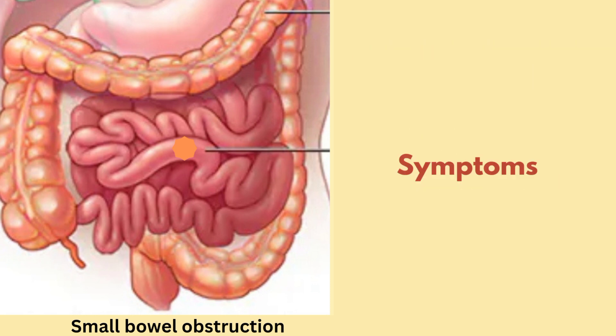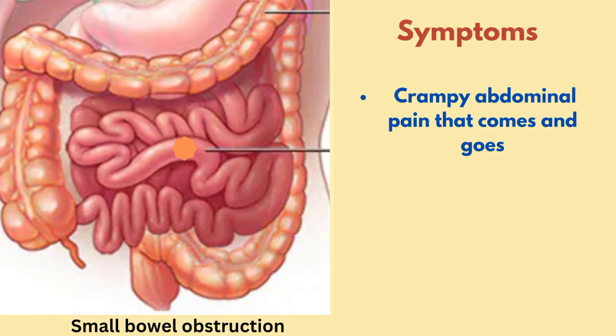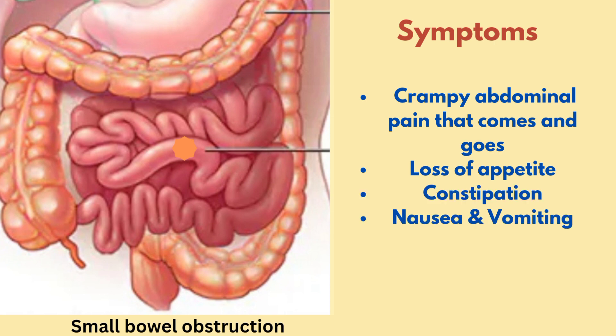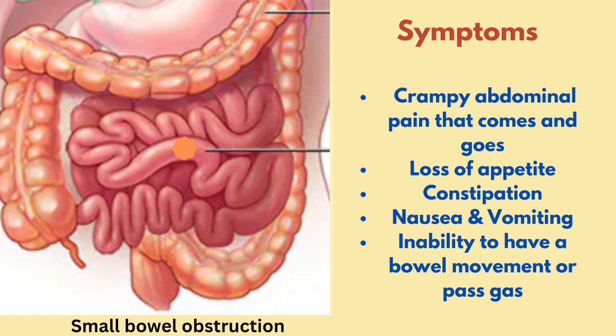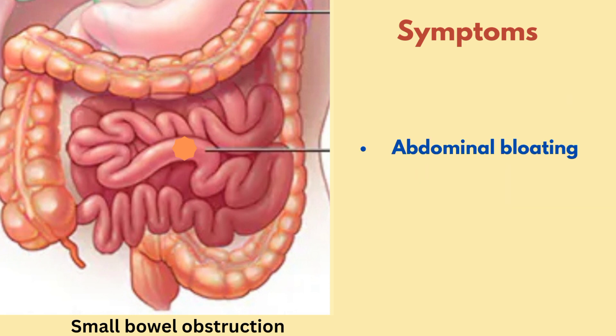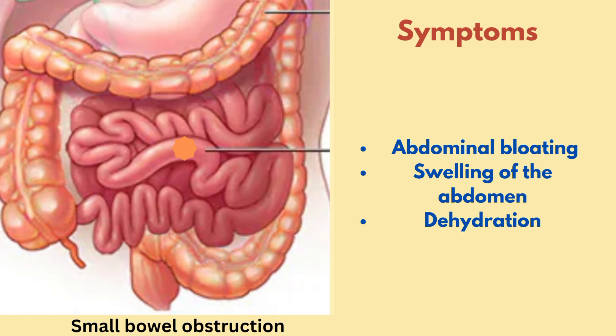Now let us see the symptoms of small bowel obstruction. They are: crampy abdominal pain that comes and goes, loss of appetite, constipation, nausea and vomiting, inability to have a bowel movement or pass gas, abdominal bloating, swelling of the abdomen, dehydration, malaise, and diarrhea.